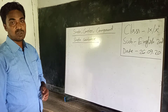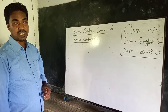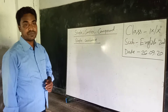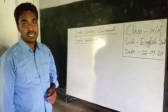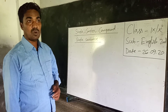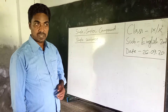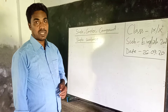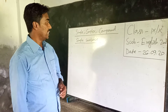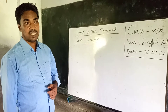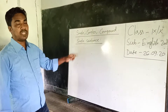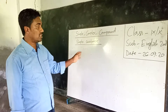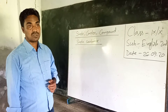Before moving into the topic, you have to know what simple, complex, and compound sentences are. First comes the simple sentence. A simple sentence has one independent clause and no subordinate clause. There may also be a phrase in a simple sentence. In a simple sentence, we see one subject, one finite verb, and one clause, and the clause is always an independent clause.